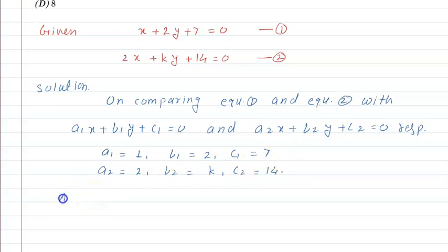According to the question, for infinitely many solutions, the condition is a1 upon a2 is equal to b1 upon b2 is equal to c1 upon c2. Now we will substitute the respective values.